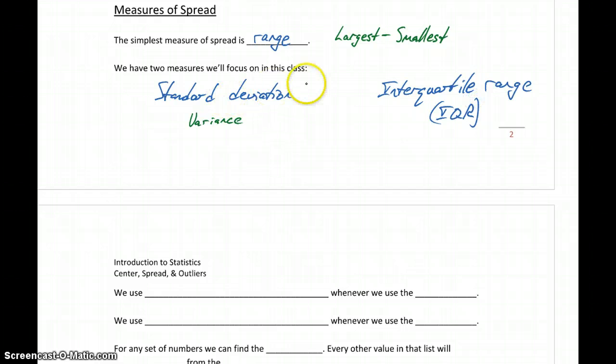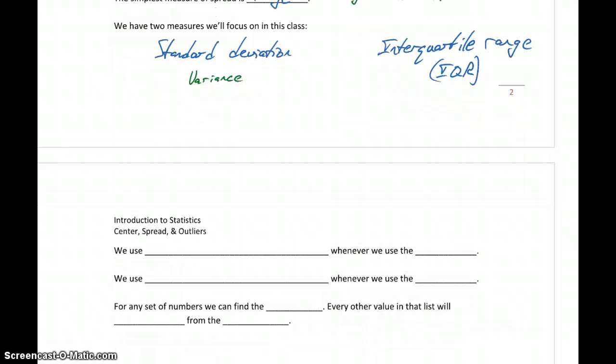We'll talk about standard deviation, what that is, interquartile range or IQR, what those mean. But in both cases, all we're doing is talking about coming up with a numerical value, so some number that tells us about how much spread or variability there is in our data.